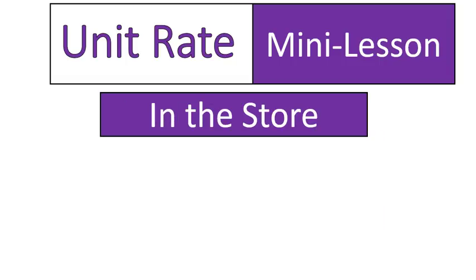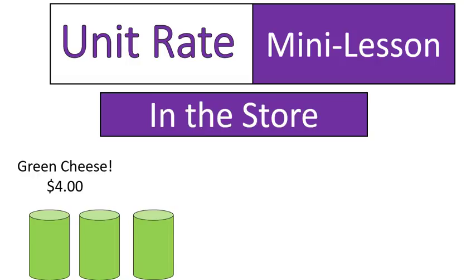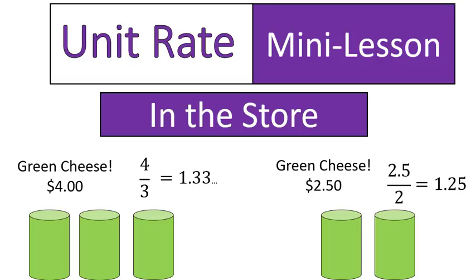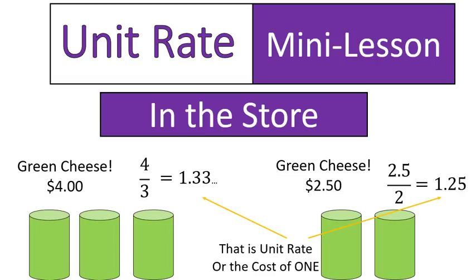If you're in the store and you want to get yourself some green cheese — which by the way is a lot like blue cheese, only more disgusting — and you see this sale: green cheese is $4 for three cans and $2.50 for two cans. You can figure out which one is a better deal by finding the unit rate. You take your $4.00, divide by three, and that gives you 1.3333 repeating. And if you take your $2.50 and divide it by two, that gives you 1.25. You can look at these two numbers — that is the unit rate.